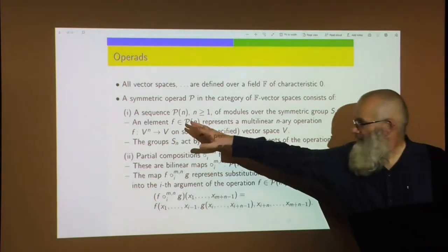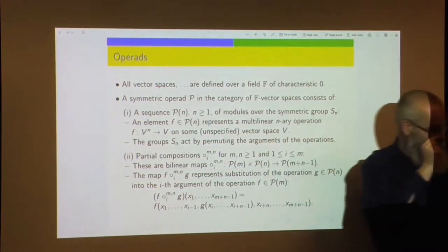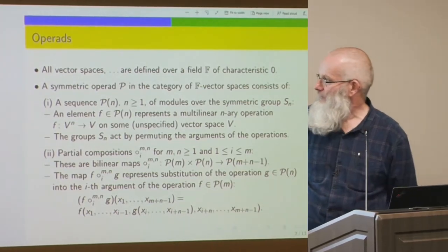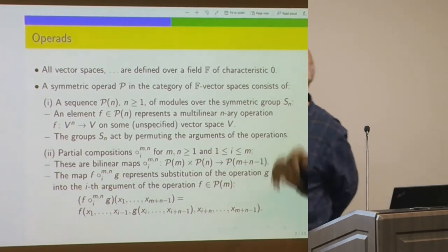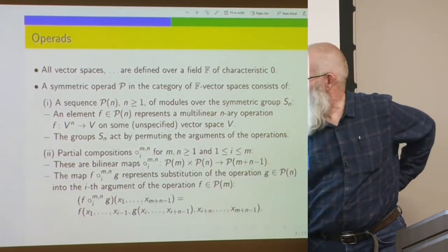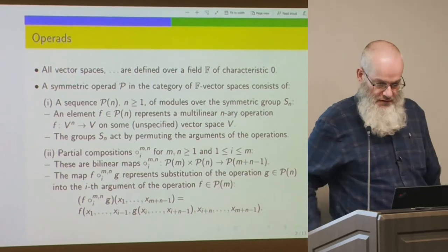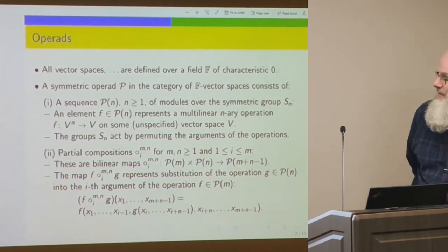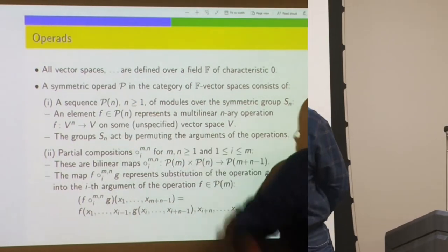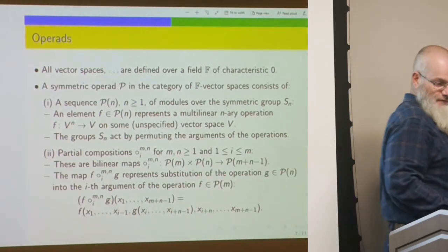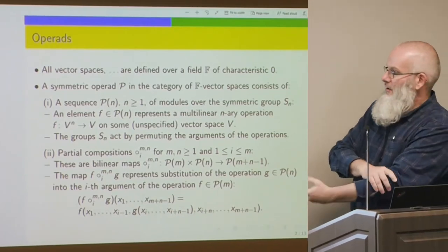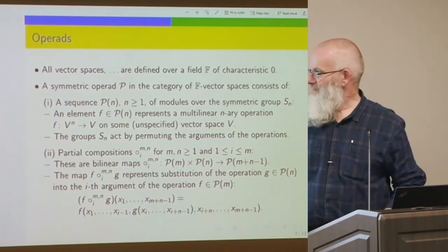P is the operad. It consists of a sequence of modules over the symmetric group S_n. So P(n) for n greater than 1 is a module over S_n — in our case, a finite-dimensional vector space which admits an action of S_n. Think of elements of P(n) as a multilinear n-ary operation on some unspecified vector space.